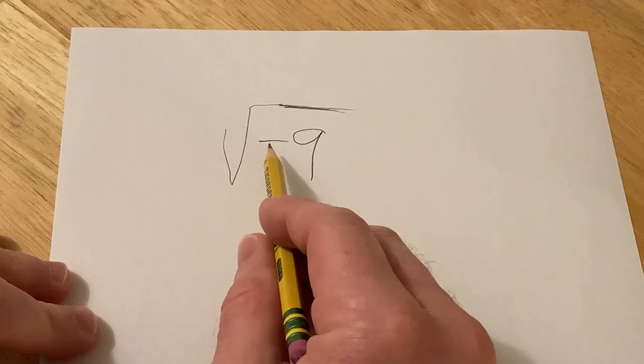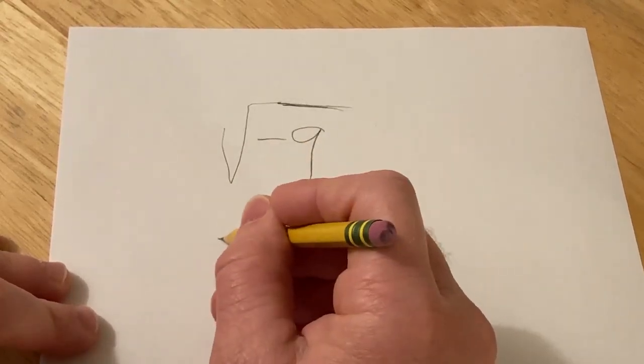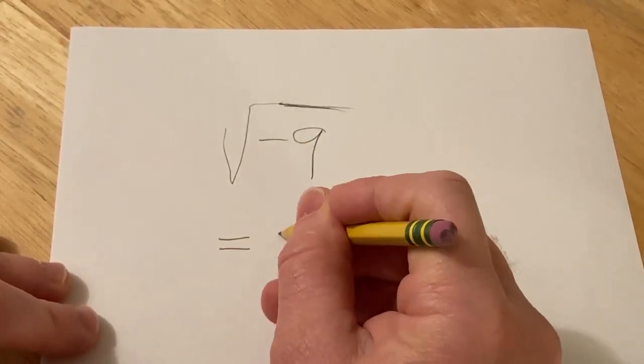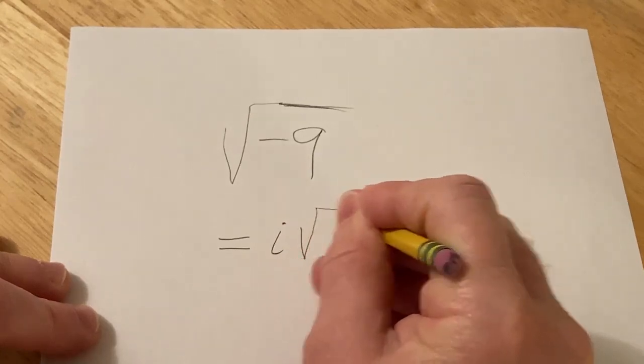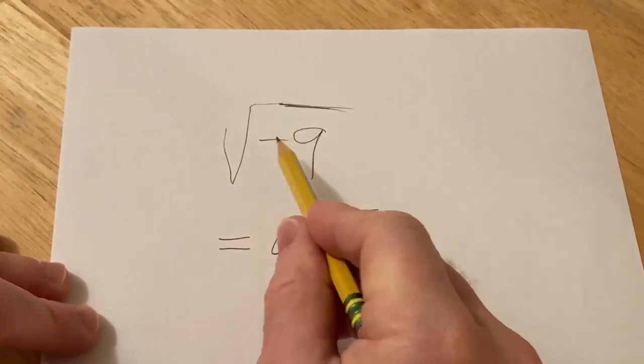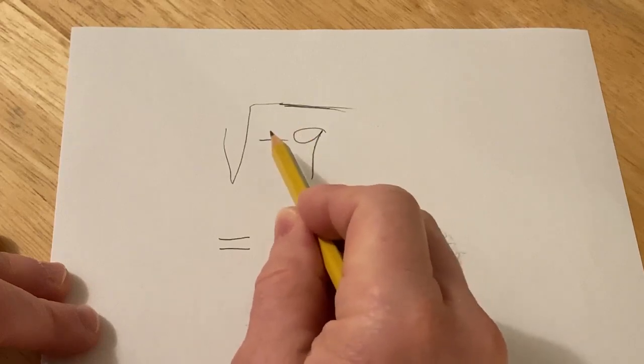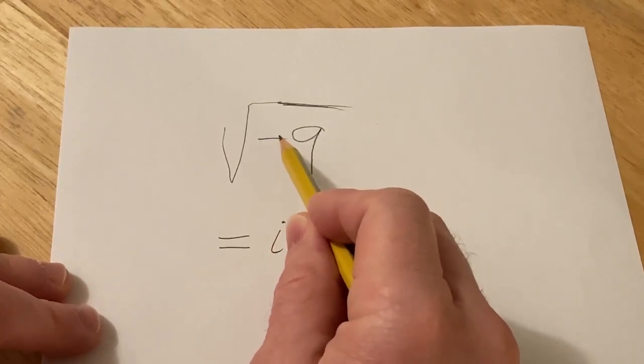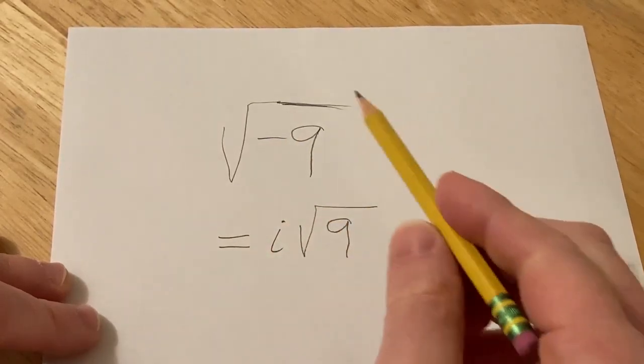Whenever you see a negative sign in the square root, you want to replace it with an i. And then we still have the square root of 9. So really important: the first step before you do anything is whenever you see a negative in a root, just replace it with i.